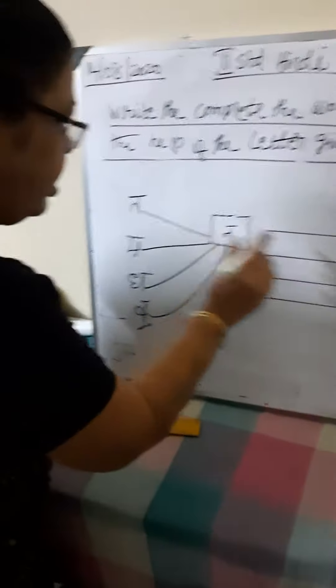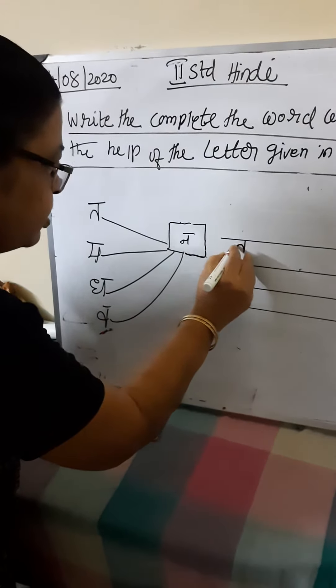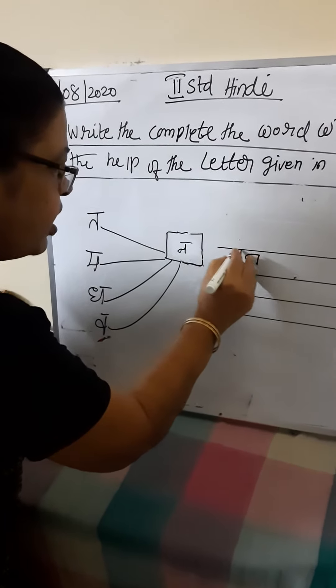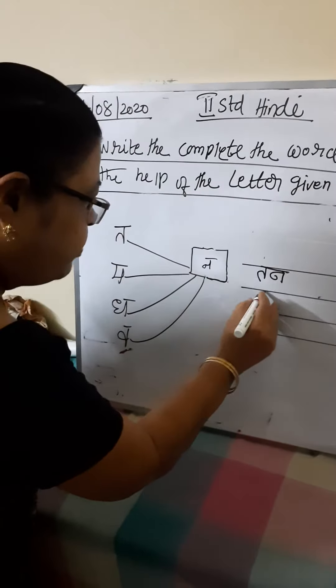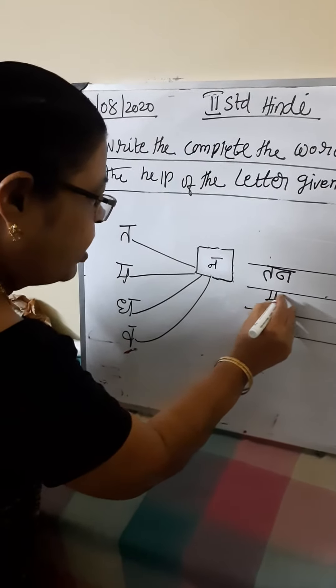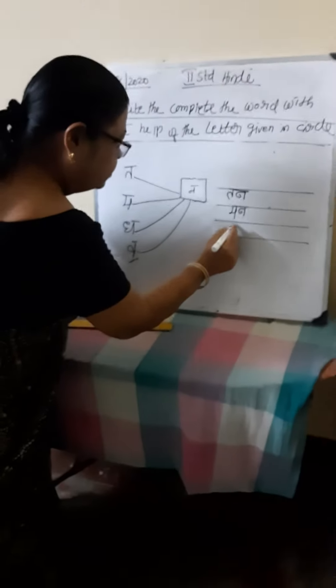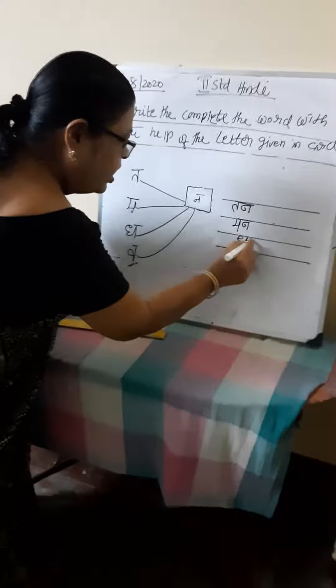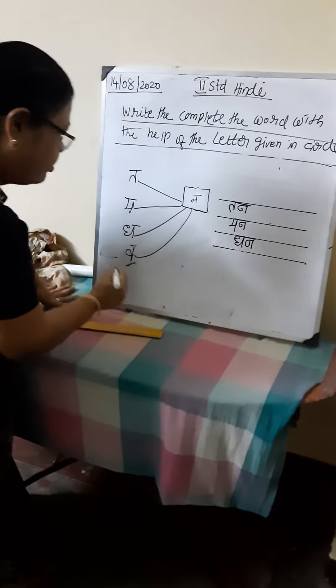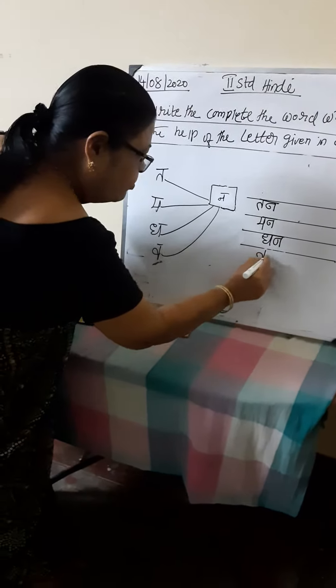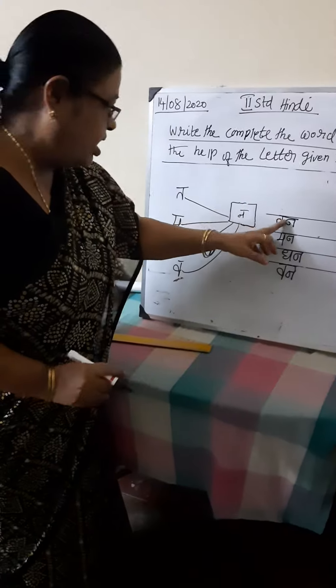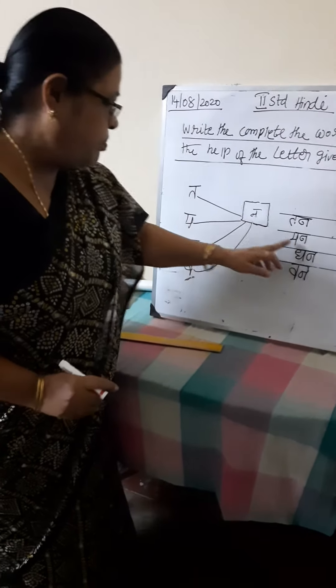Now one more like this we have to learn. Now we are going to join these letters. Ta-na-tan. Ma-na-man. Did you understand? Da-na-tan. Ma-na-man. Da-na-tan. Va-na-van.